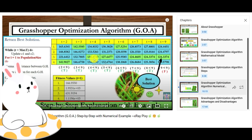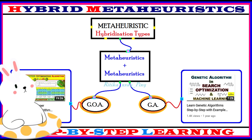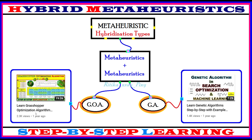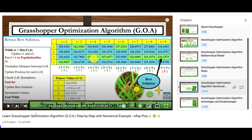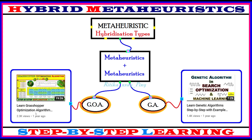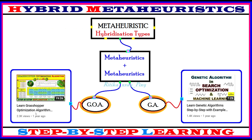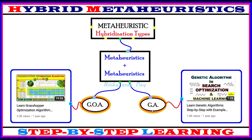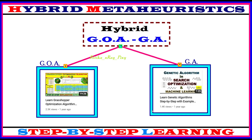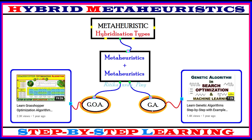Here we have the genetic algorithm and grasshopper optimization algorithm. We will discuss the hybridization process between these two. For basic details about GOA and GA individually — including mathematical models, position update, and other activities — you can check the referenced videos. In this video, we focus on the hybridization of these two meta-heuristics.